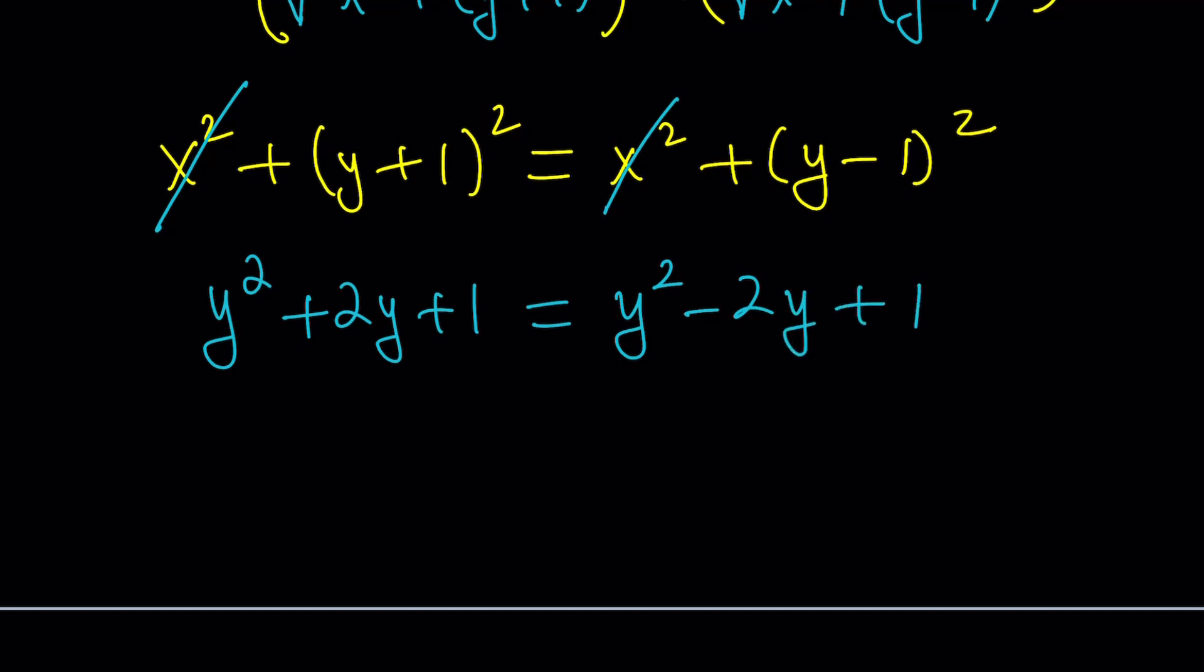And a lot of things are going to cancel out. Again, Y squared is going to cancel out. One is going to cancel out. And we're going to end up with, don't cancel out two Y's or Y's because that's just going to give you two equals negative two, which is kind of meaningless.